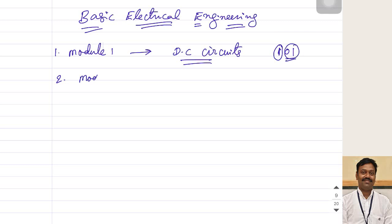Going to the second module, module number two, I am going to discuss about AC circuits. As part of the AC circuits, we are going to see what are the advantages of AC over DC, what are the disadvantages, why should we go for AC.